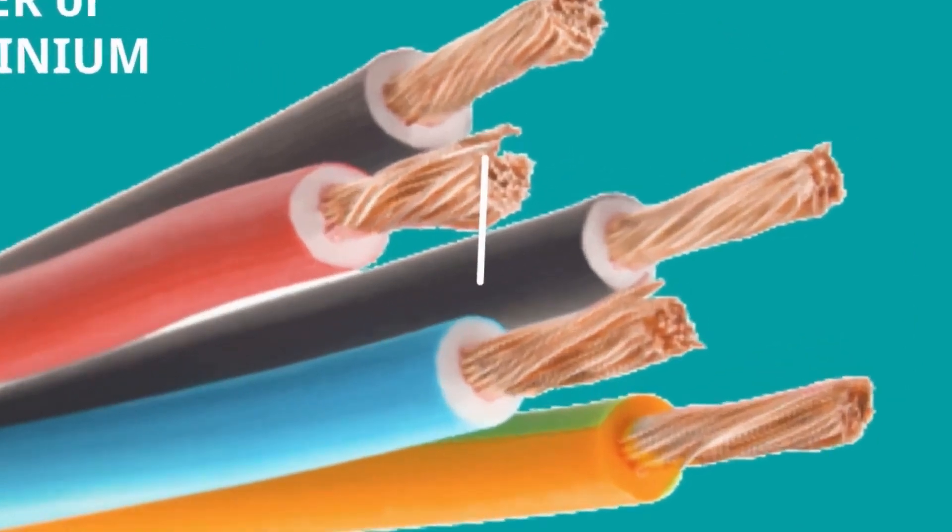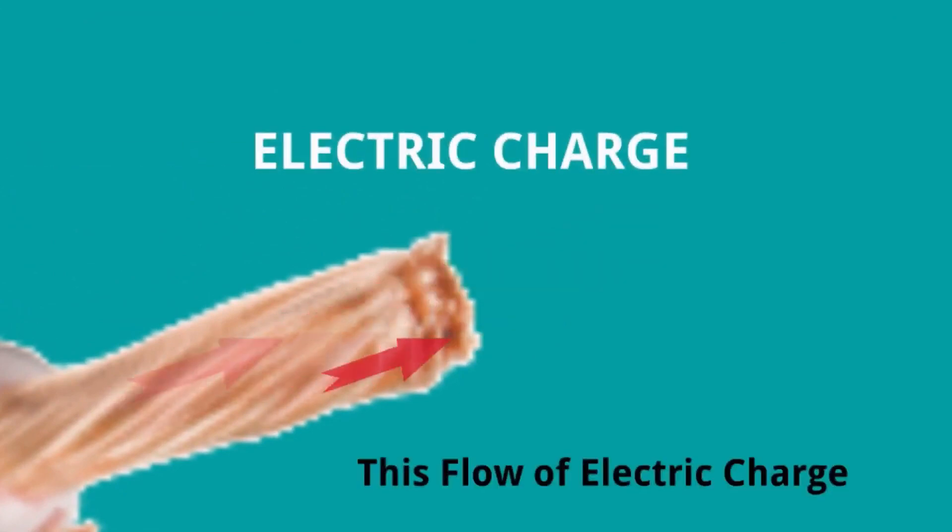The electric charge is flowing like this. This flow of electric charge makes electric current.